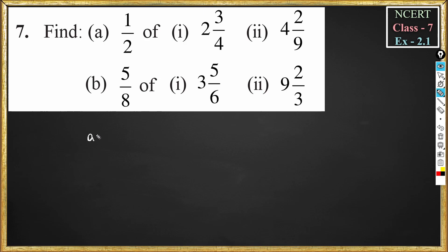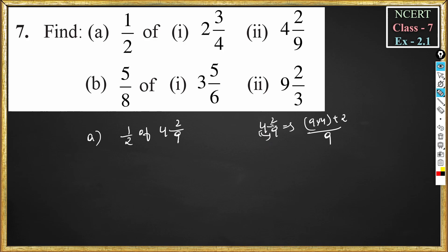Now we will do the second part of problem number A: 1 by 2 of 4 and 2 by 9. So 4 and 2 by 9 is 9 into 4 plus 2, divided by 9. We multiply these two numbers first, then add. So 9 into 4 is 36, plus 2, divided by 9 — that is 38 by 9.